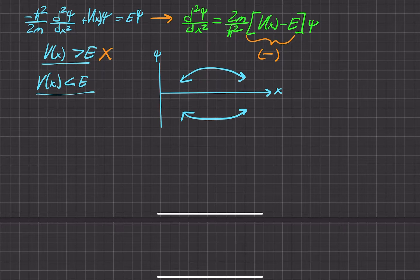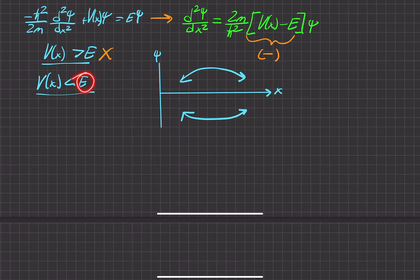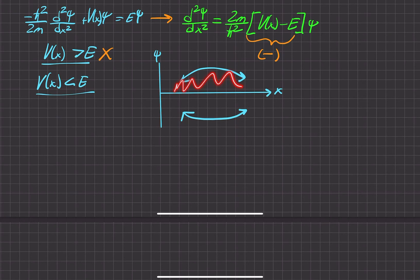This is actually the case we were aiming to solve. In summary, we need energy that is greater than the potential for normalizable solutions to exist for the Schrödinger equation.